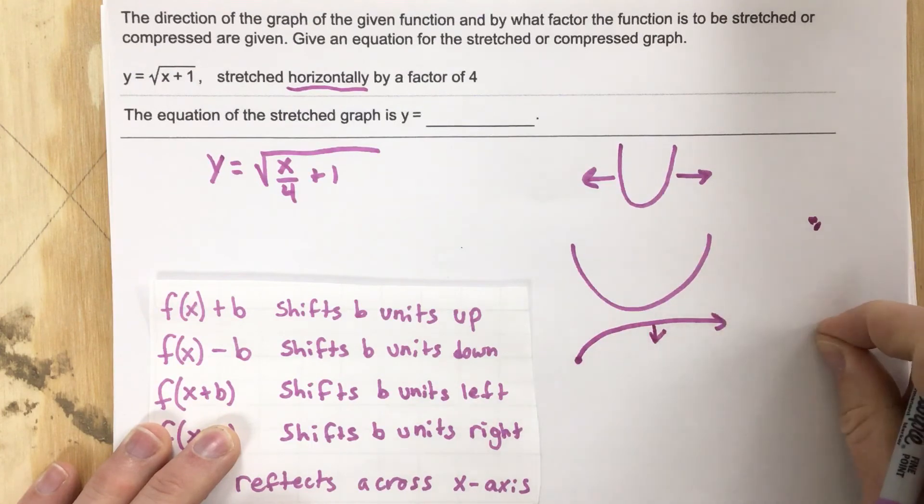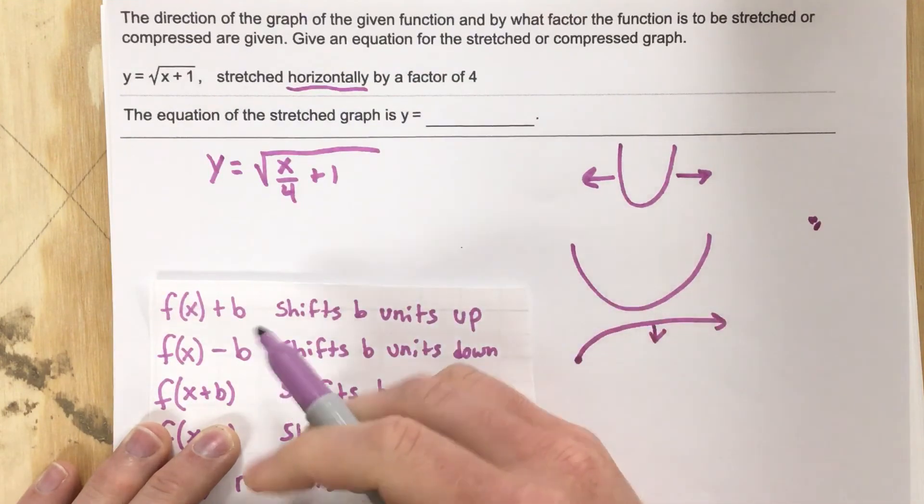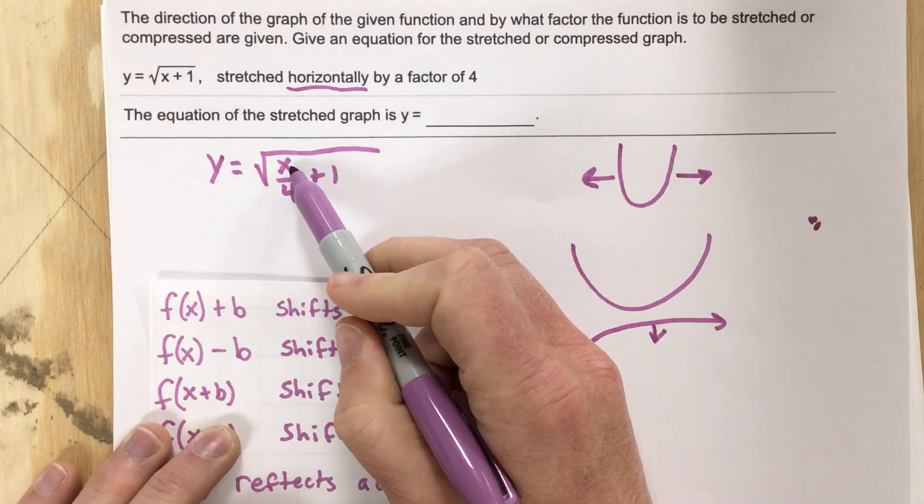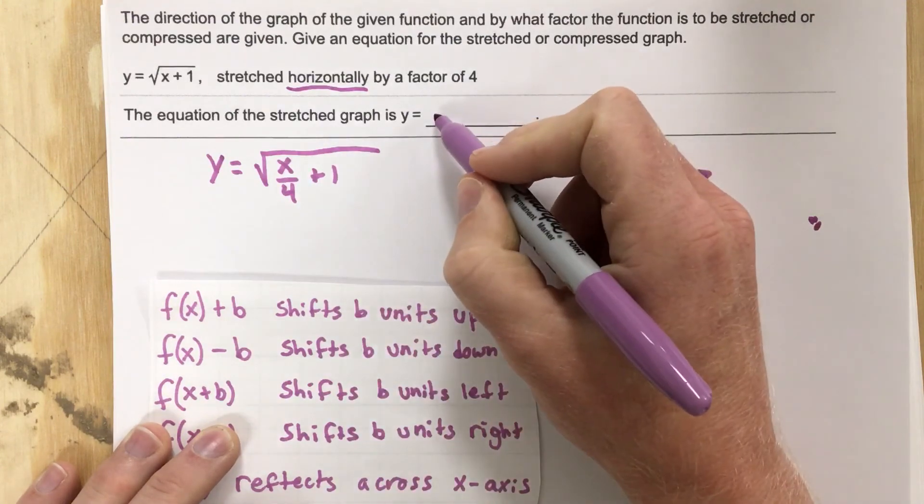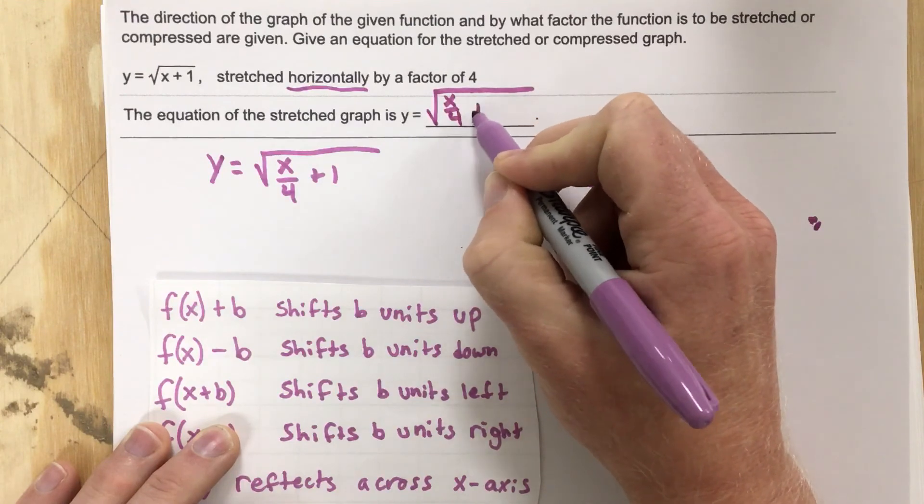Think about pulling a string this direction. It's starting to flatten out. And so the y values are increasing slower. That's why we're dividing by 4 on the independent variable so the y values increase slower. So we end up with x over 4 plus 1.